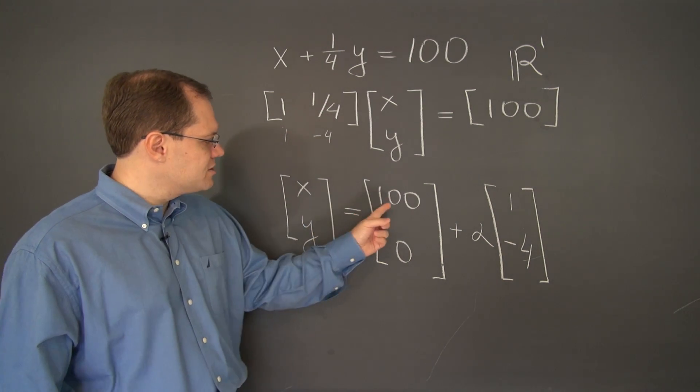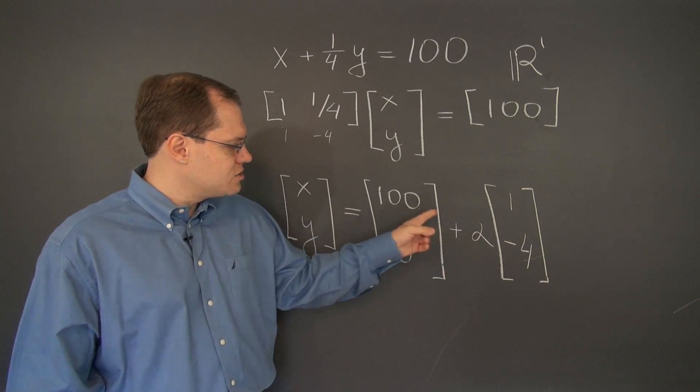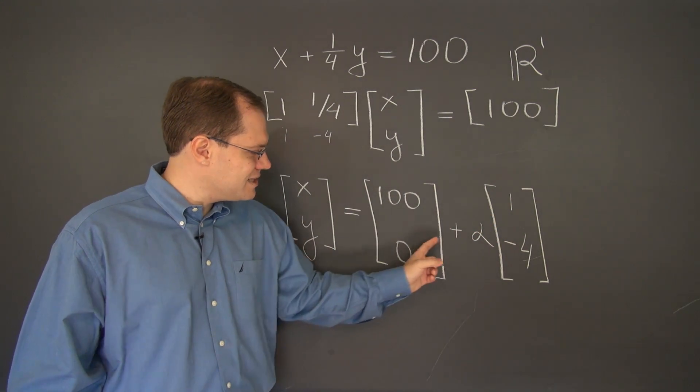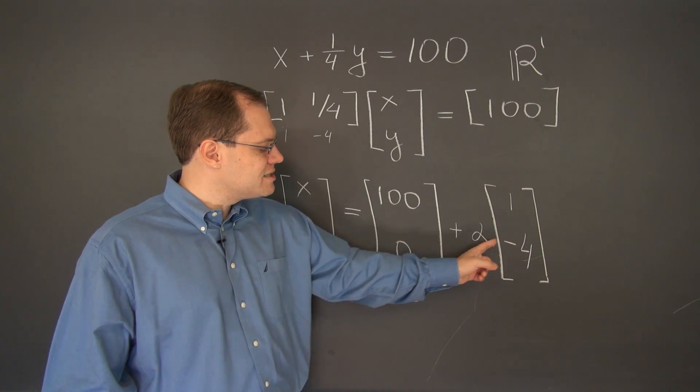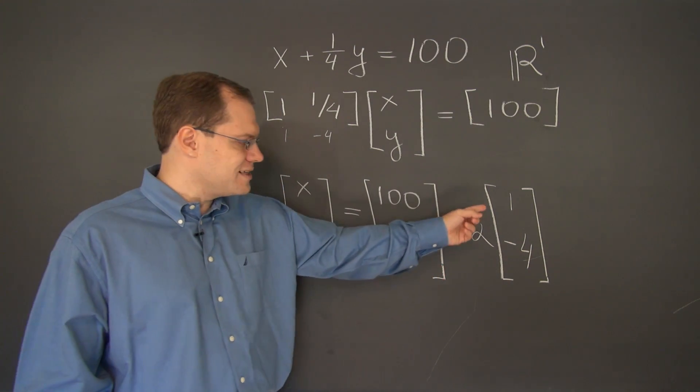Let's see how we would get 90, 40. Well, to get 90, we have to take α equals minus 10, so that we have 100 minus 10 equals 90. Let's see what we have in the second entry. Zero minus 10 times minus 4, so plus 40. So we have 90, 40 as before.